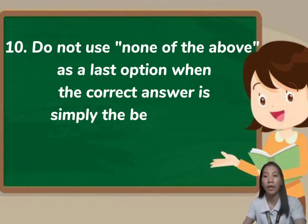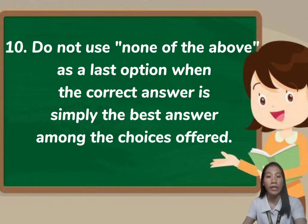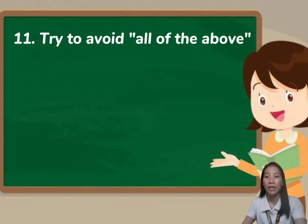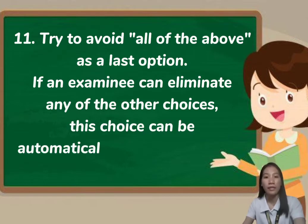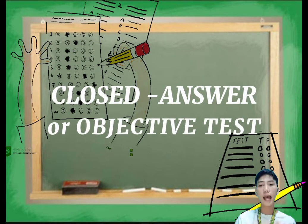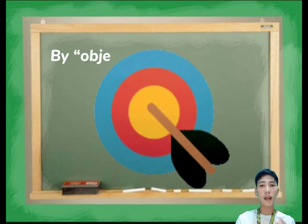Do not use 'none of the above' as a last option when the correct answer is simply the best among the choices offered, because this option doesn't help the student test what the correct answer is — it only tells them that the provided choices are incorrect. Lastly, try to avoid 'all of the above' as a last option as well.